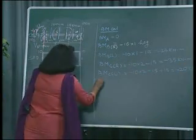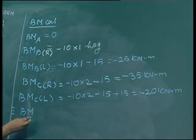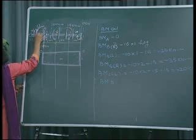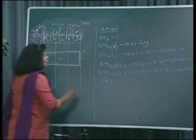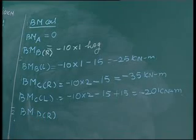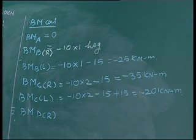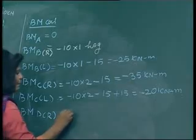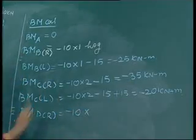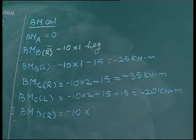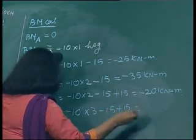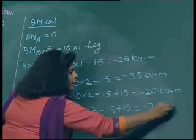Bending moment at point D — at D also we have a couple moment, so we go just on right and just on left. Just on right: one 10 kilo Newton force, one 15, and one 15. So minus 10 into 3 (distance to D) minus 15 plus 15 — that is equal to minus 30 kilo Newton meters.